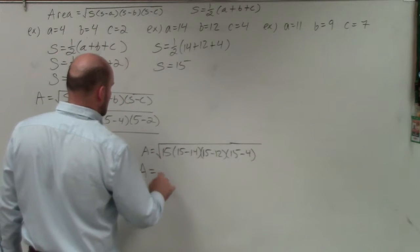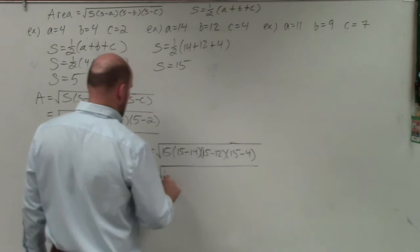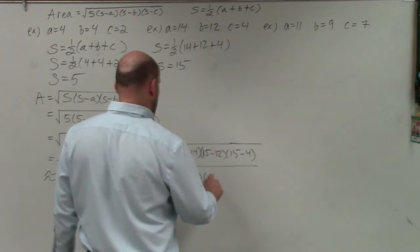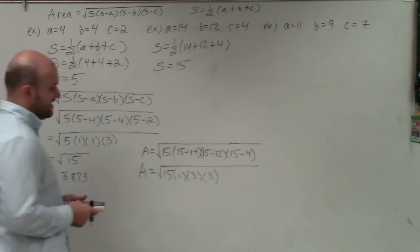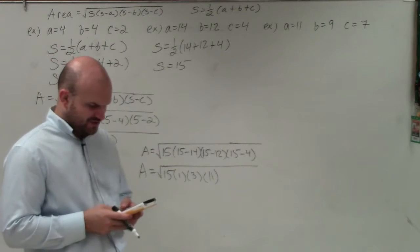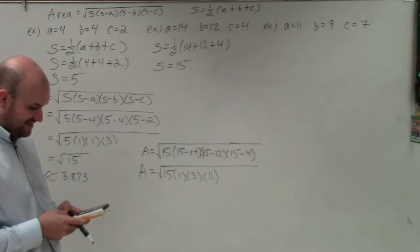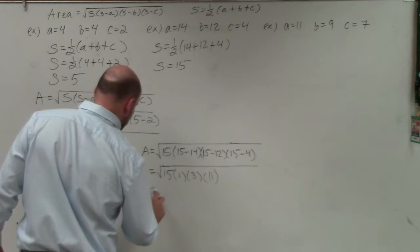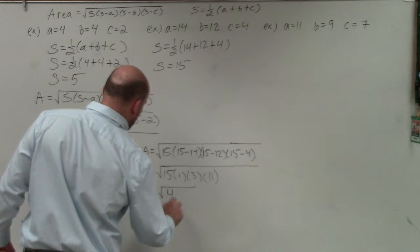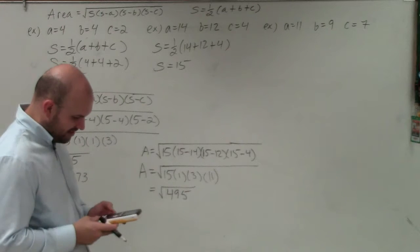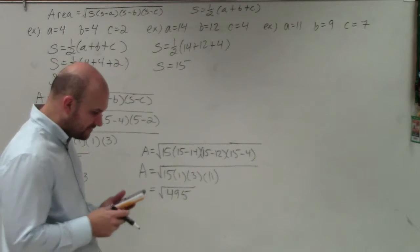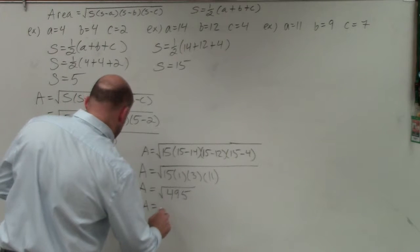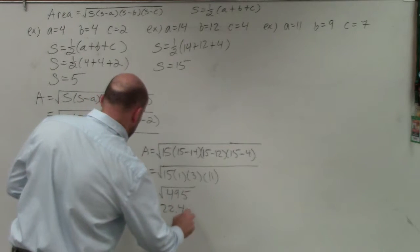So therefore, area equals 15 times 1 times 3 times 11. I don't want to do that work in my head, nor do I think I probably could. So I'll do 15 times 1 times 3 times 11. And I get 495. So therefore, that's equal to the square root of 495, which again, I could approximate to the nearest thousandth. And area would equal 22.49.